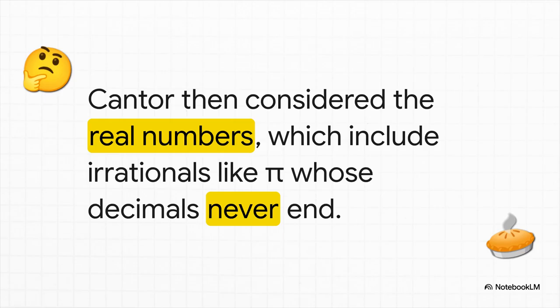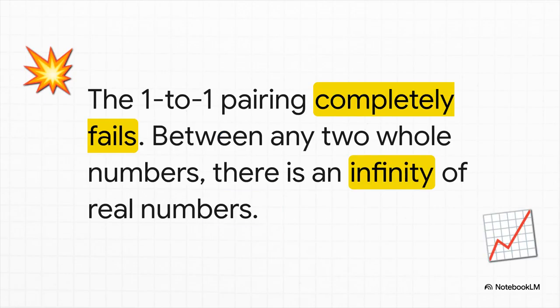They're just fundamentally messy. And when he tried to pair the nice, neat, natural numbers with these messy, real numbers, well, the competition was a total blowout. It turns out that between any two whole numbers, like say 1 and 2, there isn't just one real number, there is an entire infinity of them. The one-to-one pairing just completely falls apart. And that proved it. There is a bigger, uncountable infinity out there.